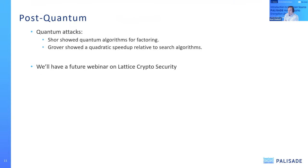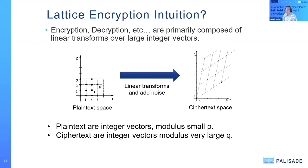We are post-quantum and we're going to have a future webinar on lattice crypto security. In terms of the computational primitives used in Palisade to support lattice crypto, at its heart it's basically a large number of linear transforms and noise generation. Lattice crypto libraries effectively are linear transforms and noise manipulators over vectors. From an engineering perspective with a background in signal processing, this is how we've generally structured lattice crypto as support for linear transforms.